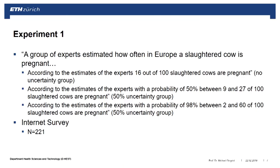In the first experiment, we asked: why not provide one group just the point estimate — simply that 16 out of 100 slaughtered cows are pregnant? That's the no-uncertainty group. The second group also received the point estimate, plus the 50% interval: between 9 and 27. The third group received the 98% interval, to see whether the width of the interval makes a difference. We conducted an internet survey with just over 200 participants.